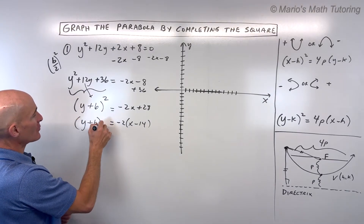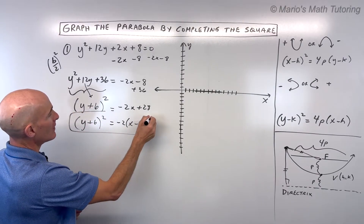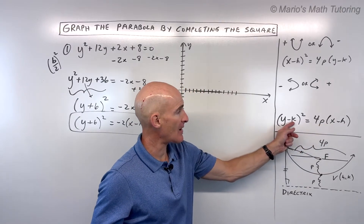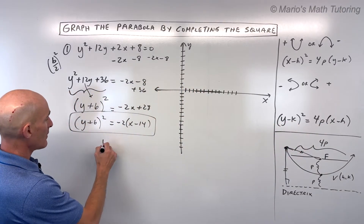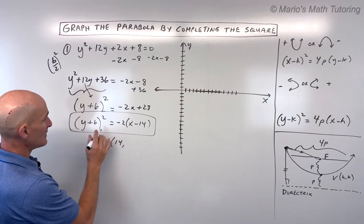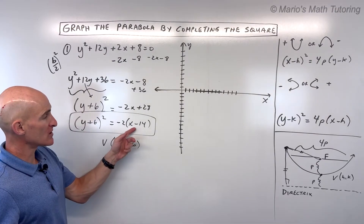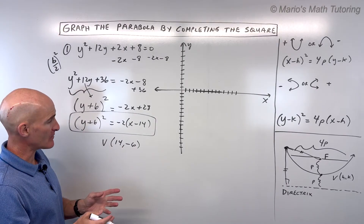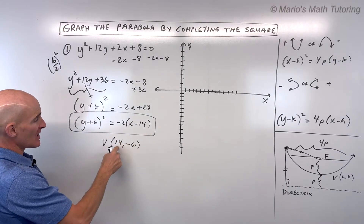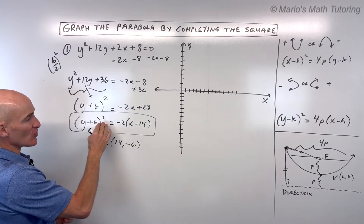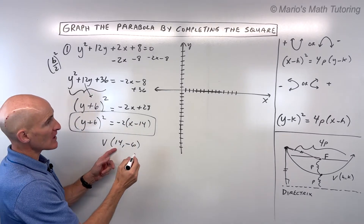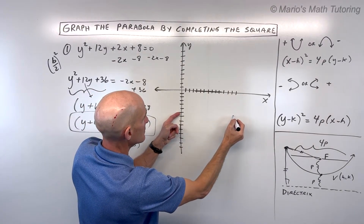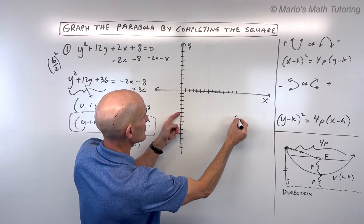Now we have it in standard form of the equation of a parabola. We can identify the vertex (h, k): the x-coordinate is the opposite sign of what appears in the equation, and same for y. So the vertex is at (14, −6). Make sure you match x with x and y with y, not just reading left to right. The vertex at (14, −6) is plotted right about here.